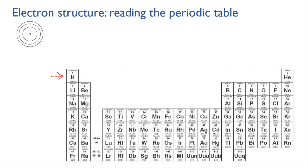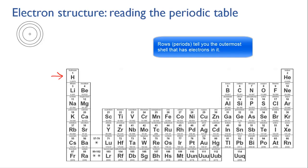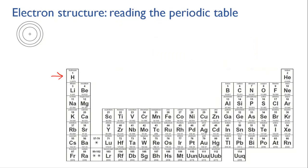Well, the rows of the periodic table, which are called periods, tell you which electron level is the outermost in that atom. Remember that in an ordinary neutral atom, the number of protons equals the number of electrons.